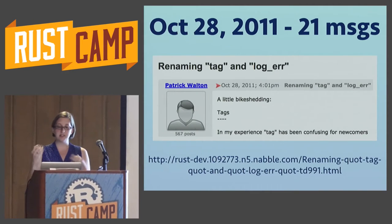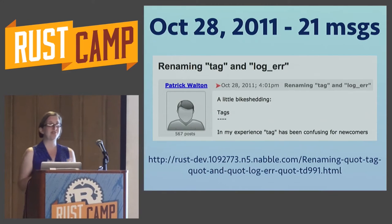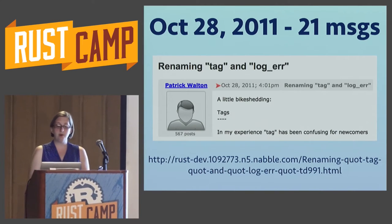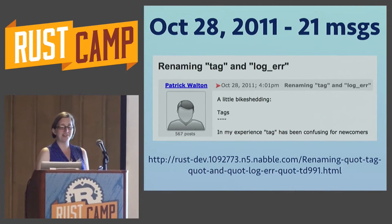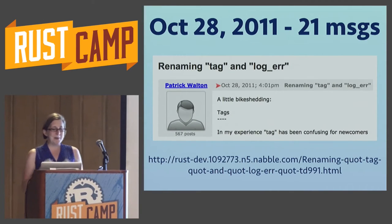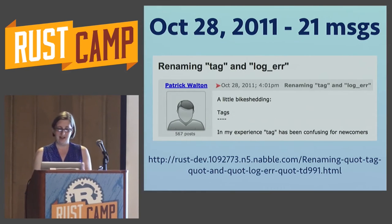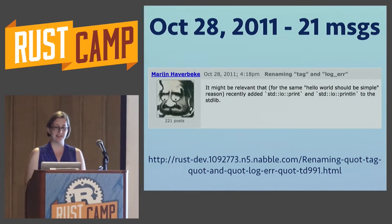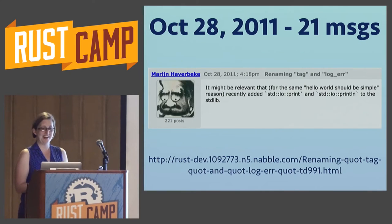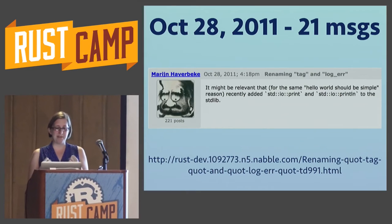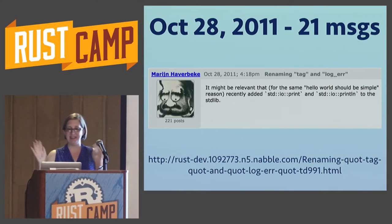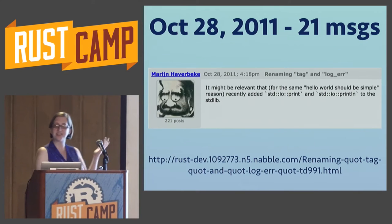I love reading the mailing list because it's where discussions of important things happened before it was clear that they were important things. For example, Patrick started a thread in 2011 before Rust 0.1 — a short 21-message thread, but really dense with important ideas. Patrick was proposing renaming 'tag' and 'log error.' At that point in time, log and log error were the only way to get output on the screen, and you had to set your RUST_LOG environment variable just right, which made Hello World not very nice. And then Ruin responded and said, 'Oh hey, by the way, I just added print and println to the standard library.'